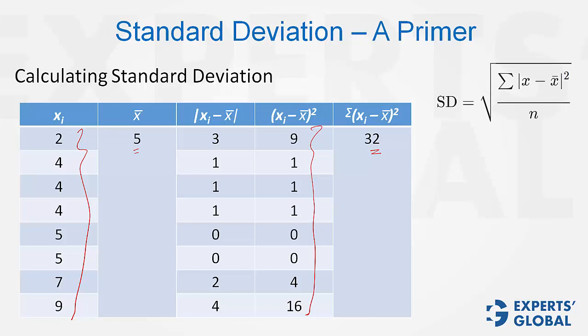And then, standard deviation is the square root of the sum obtained in the fifth column divided by the number of terms in the set. So in this case, the sum is 32, the number of elements is 8, and therefore, standard deviation is square root of 32 upon 8, which is 2. That is how you find out the standard deviation.